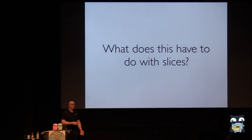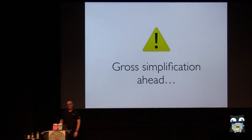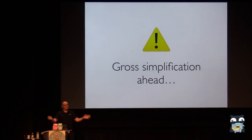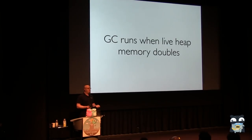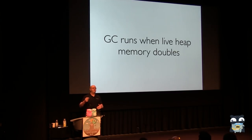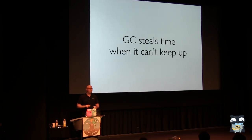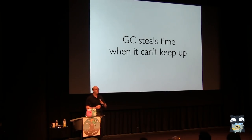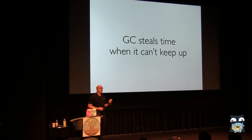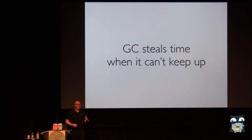What's going on here? The first key point is the garbage collector runs when your live heap memory doubles — that's a trigger for it to see if memory can be reclaimed. The other important point is the garbage collector will steal time if it can't keep up. If you are allocating so fast that the garbage collector is never going to get to the end of what you're allocating, it steals time back from your program to finish hunting through the memory — you get back pressure from the garbage collector.